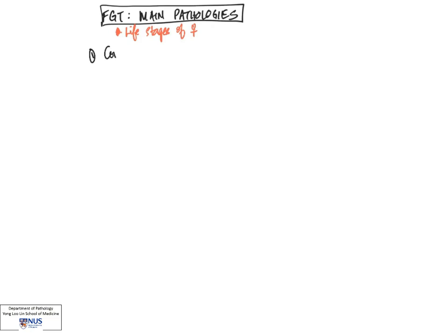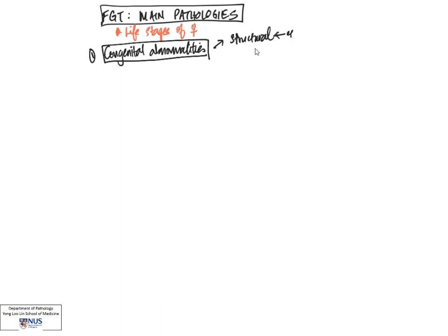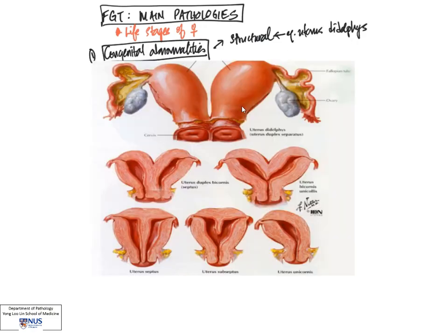From birth, the first thing that we want to look at is congenital abnormalities. These can be thought of firstly in the form of structural abnormalities. For example, some women are born with a physically abnormal uterus. This is called uterus didelphys, where there are actually two uterine cavities, two endometrial cavities, and there are several anatomical variants of this abnormality.